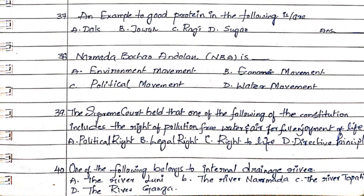Question 40: One of the following belongs to an internal drainage river. Option A. The river Luni, Option B. The river Narmada, Option C. The river Tapti, Option D. The river Ganga. The answer is Option A. The river Luni.